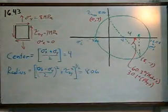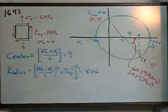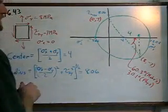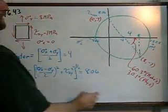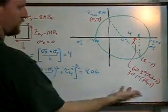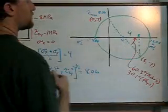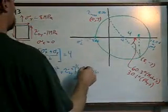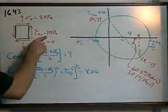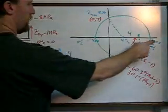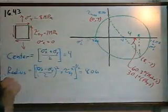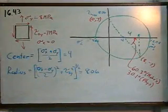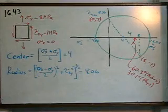Which, ironically, is also the extra credit question: what is the stress situation at 30 degrees physical? At 30 degrees physical, it is almost exactly the same — practically 0 shear stress and approximately 12.06 — around 12 megapascals normal stress.